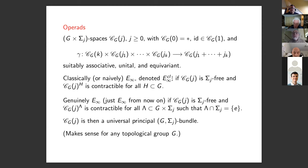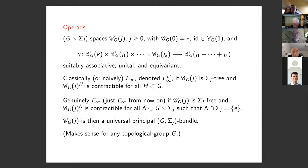Classically, we say that a G-operad is classically E-infinity if the J-space is Sigma-J-free and the H-fixed-point spaces are contractible for all subgroups H of G. We say it is genuinely E-infinity — just E-infinity from now on — if the J-space is Sigma-J-free and the fixed points are contractible for all subgroups with trivial intersection. This records freeness because the action is assumed to be free.